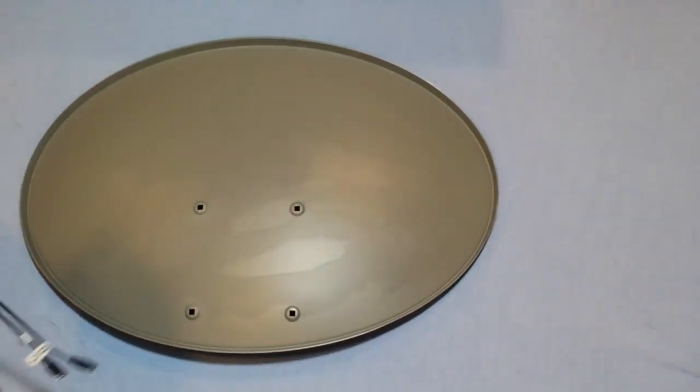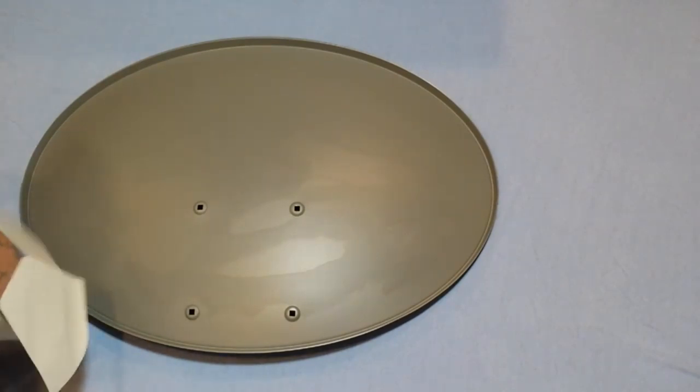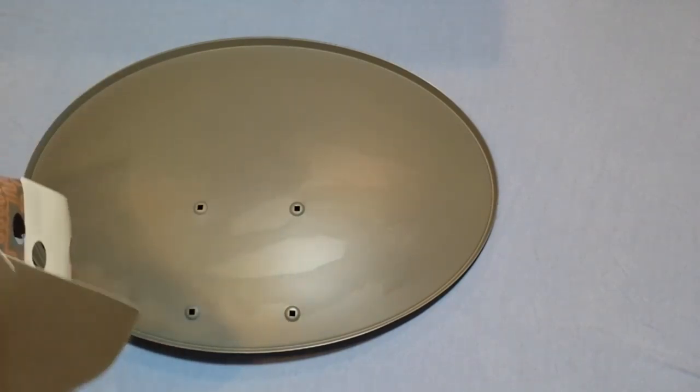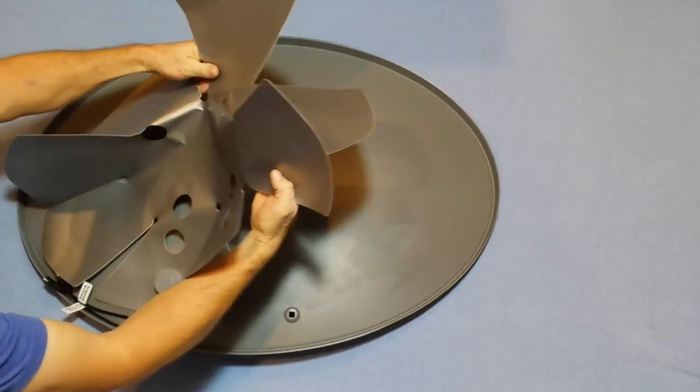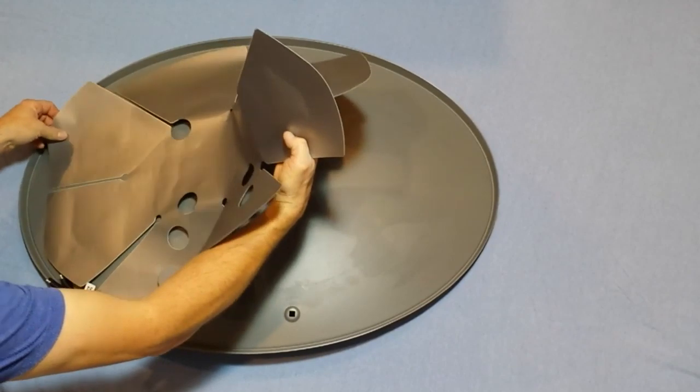Carefully turn the dish heater upside down and position it so that all of the holes on the dish are still visible. This is very important if you're on the back. Also, the wire coming out from it should be toward the bottom of the dish.